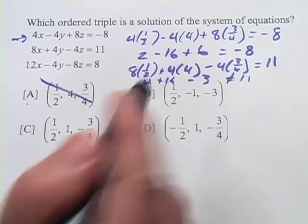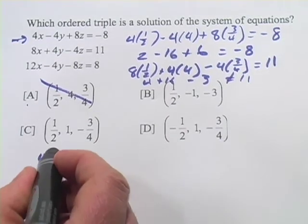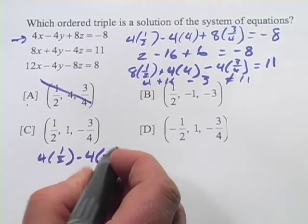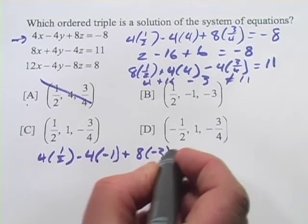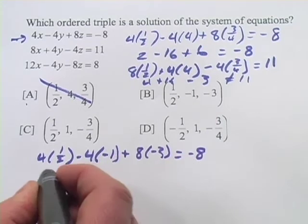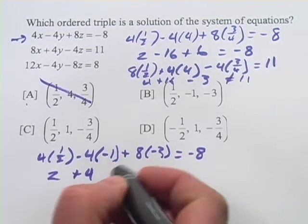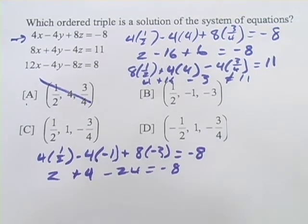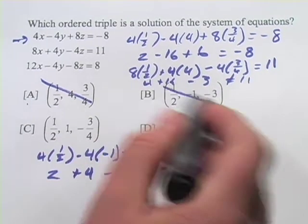Let's move on to B. See what we get there. We'll plug these numbers into the first one. So 4 times 1/2, minus 4 times a negative 1, plus 8 times a negative 3 equals negative 8. And we get 2 plus 4, minus 24, equals negative 8. And I don't think that one works out. That's definitely not negative 8. So B is out.